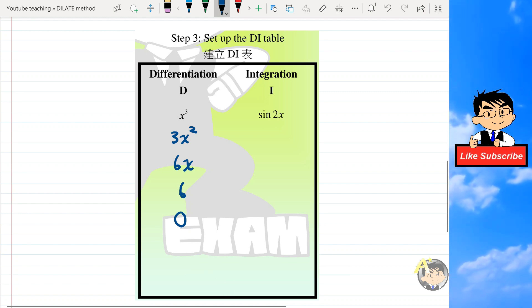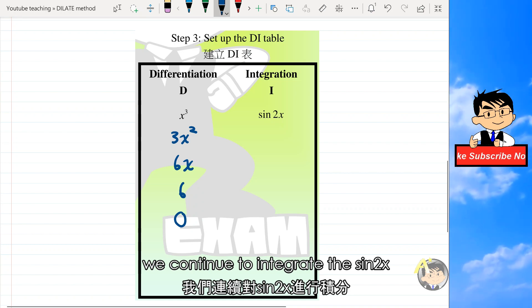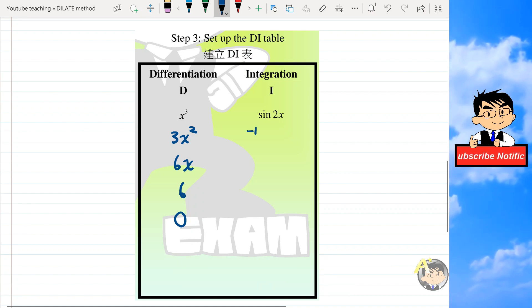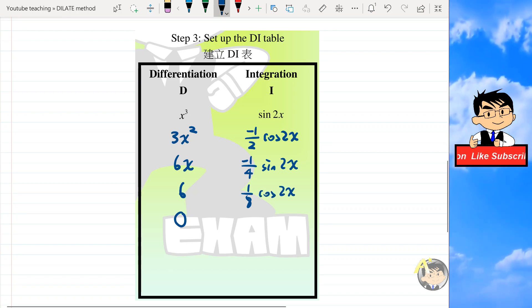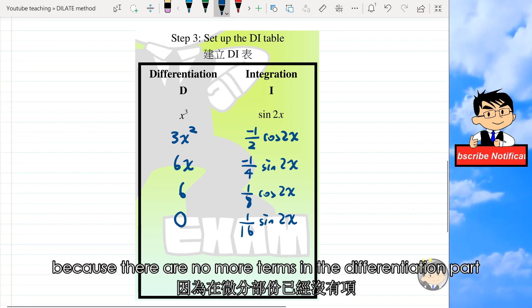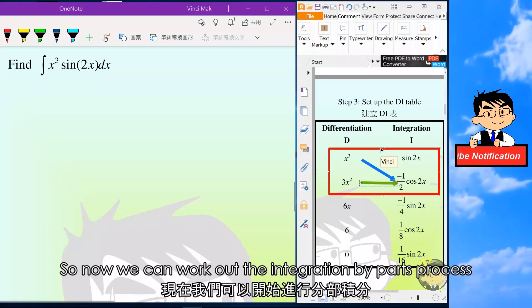On the right-hand side, we continue to integrate the sine 2x until the fourth column because there are no more terms in the differentiation part. So now we can work out the integration by parts process.